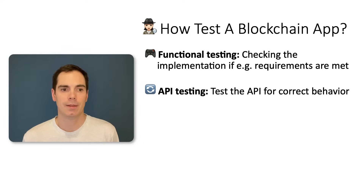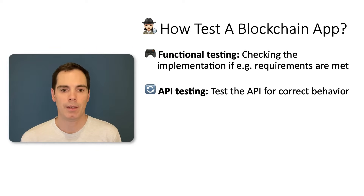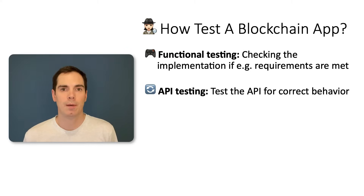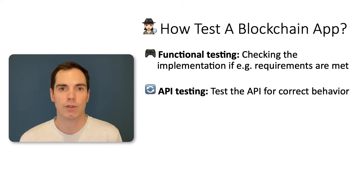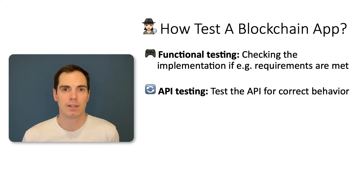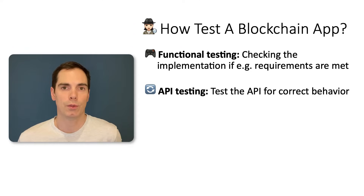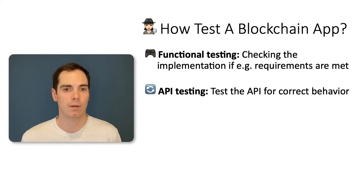API testing is really important for blockchain applications. We need to ensure that interaction between applications is still working. In the blockchain ecosystem, we have to check for correct behavior, check the requests and responses. We can use the known tools that you already use for API testing for blockchain as well, which is great.